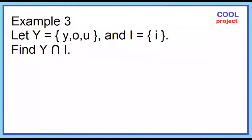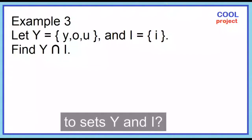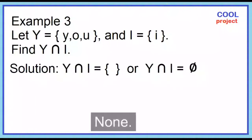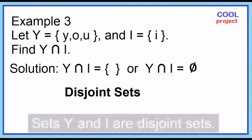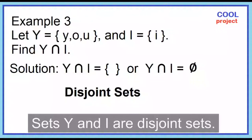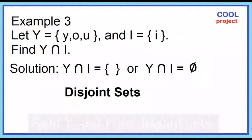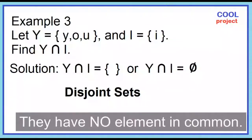Example number 3: Given set Y and set I, find Y intersection I. What are the elements common to sets Y and I? None. Sets Y and I are disjoint sets — they have no element in common.